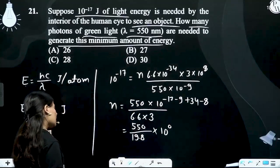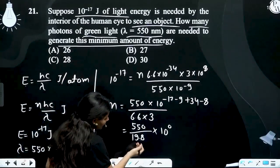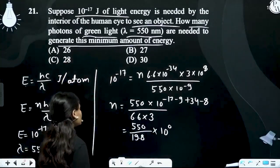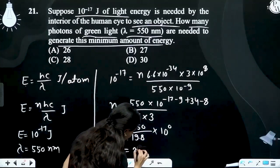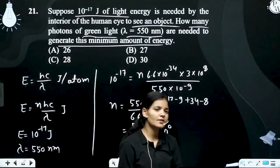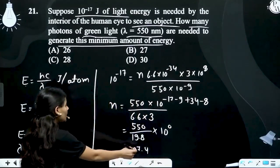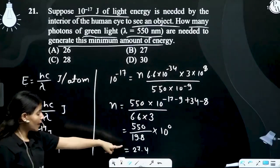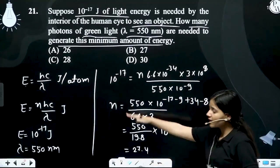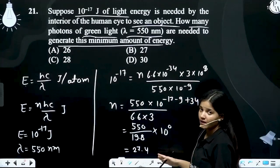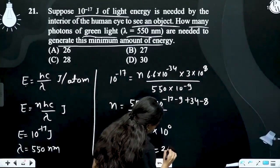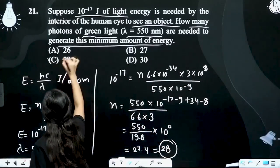550 divided by 9.8 — approximation 20 likh sakte ho? Exact calculate karna padega, kyunki answer 27.34 ya 4 aayega. Ab jo photon hai, wo ek integer number hai — ek photon ya do ya teen, fraction mein nahi ho sakta. Minimum energy itni requirement thi, toh minimum 27 photons se energy kam aayegi — afford nahi kar sakte. Isliye answer 28 hoga. C option is correct.